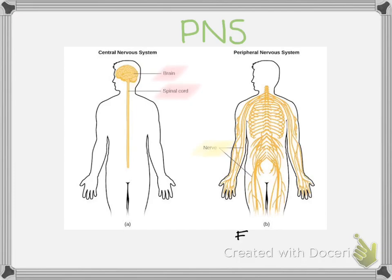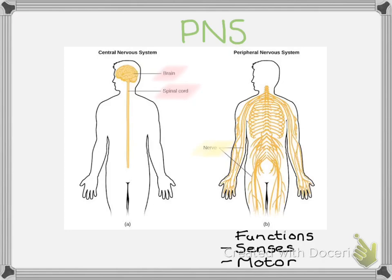The two main functions of our peripheral nervous system have to do with senses and with motor function. Looking at the diagram, that links to where you can see the nerves, because senses are linked to things like your organs, your skin and your ears, and your motor function is linked to your muscles.